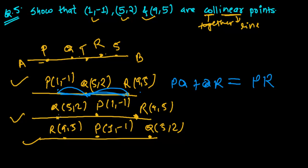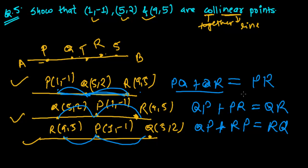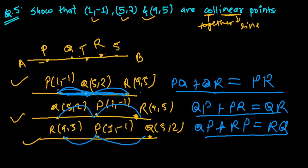In each figure, the relationships hold similarly — QP plus PR equals QR, and RP plus PQ equals RQ. These are the fundamental conditions for three points to be collinear: the sum of two sides must equal the third side.